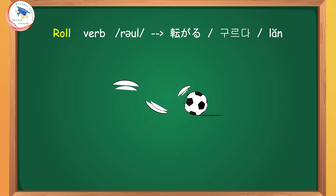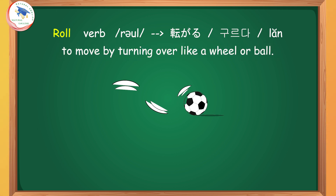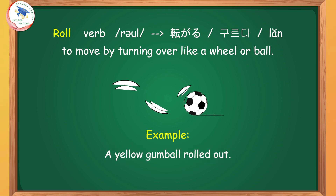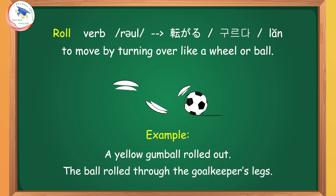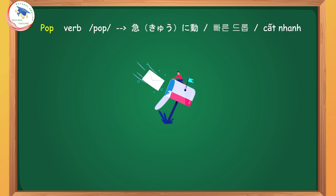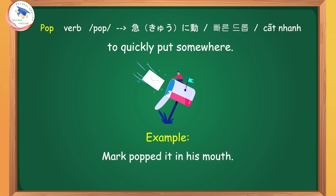Roll: to move by turning over like a wheel or ball. Example: A yellow gumball rolled out. The ball rolled through the goalkeeper's legs. Pop: to quickly put somewhere. Example: Mark popped it in his mouth. He popped the letter into his pocket.